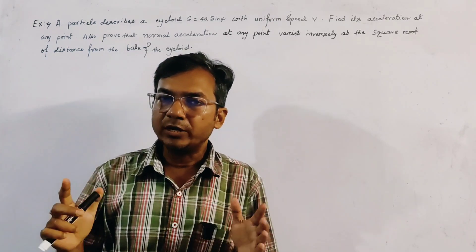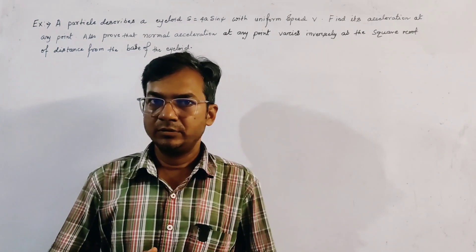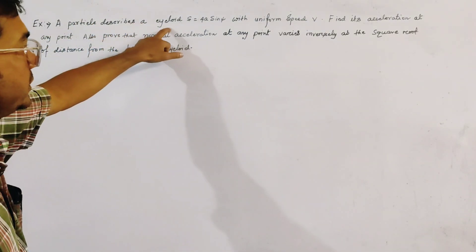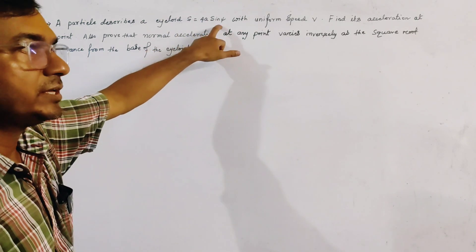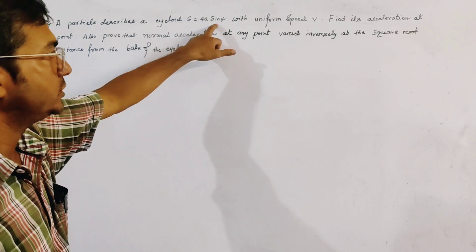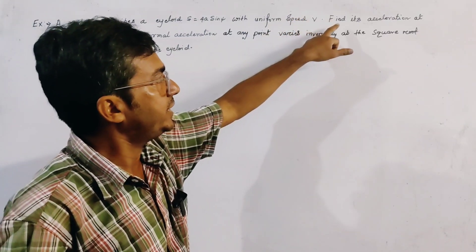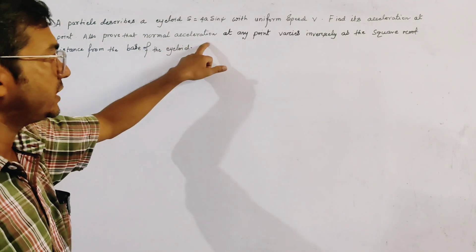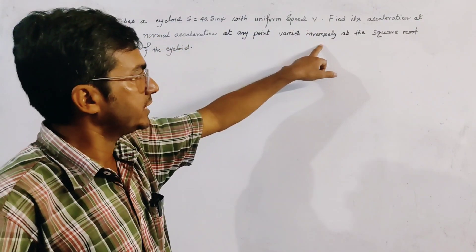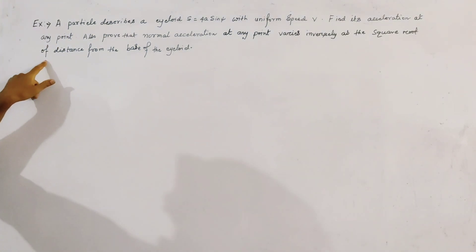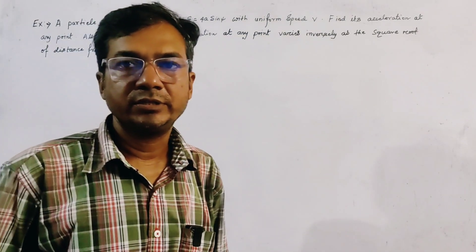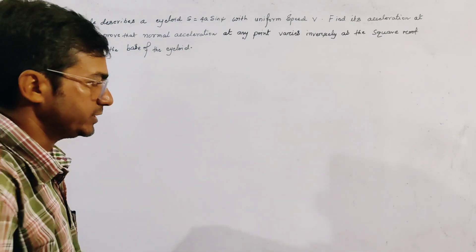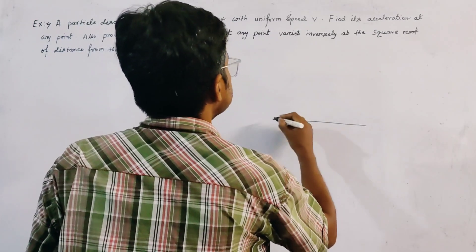A problem from cycloidal motion: a particle describes a cycloid whose intrinsic equation is s = 4a sin ψ. Given uniform speed v, find its acceleration at any point. Also prove that the normal acceleration at any point varies inversely as the square root of the distance from the base of the cycloid.